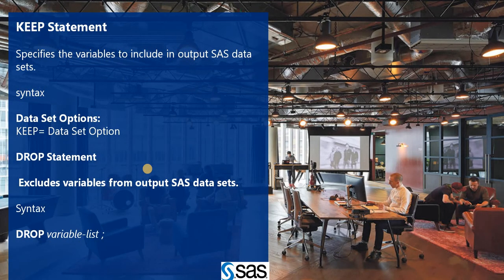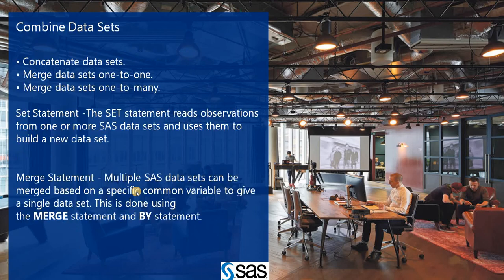Next are the KEEP and DROP statements. KEEP specifies the variables to include in the output SAS data set — so if you only need a few columns, you use KEEP to retain only those. DROP is the opposite: it excludes specific variables from the output SAS data set.